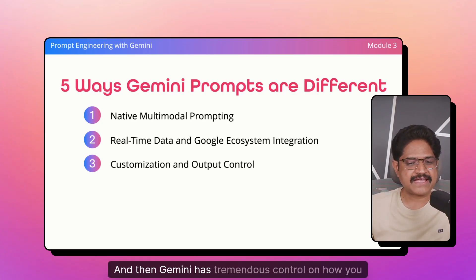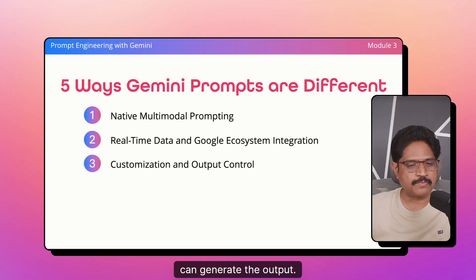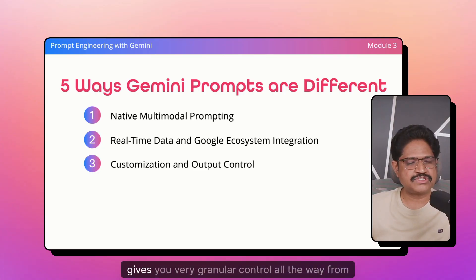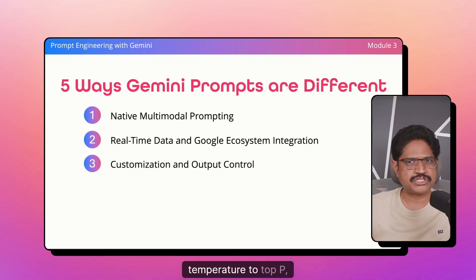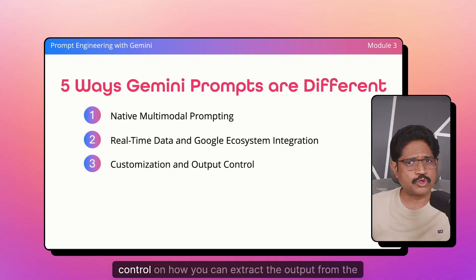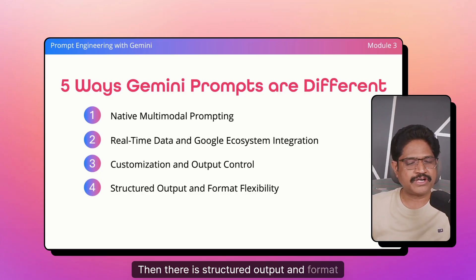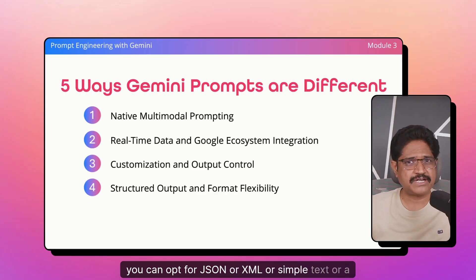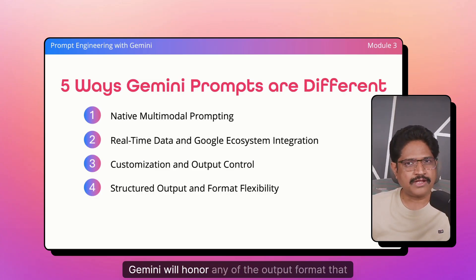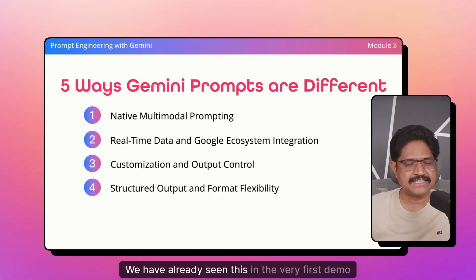Gemini also has tremendous control over how you can generate the output. The generation configuration gives you very granular control — all the way from temperature to top-P, top-K, and the number of tokens. You have a lot of control on how to extract output from the LLM. There is also structured output and format flexibility: when generating content you can opt for JSON, XML, simple text, a bulleted list, a Python list, or a specific code format. Gemini will honor any output format you request. We already saw this in the very first demo.